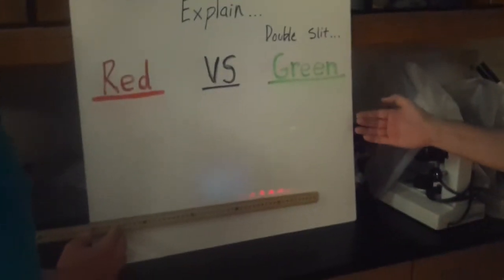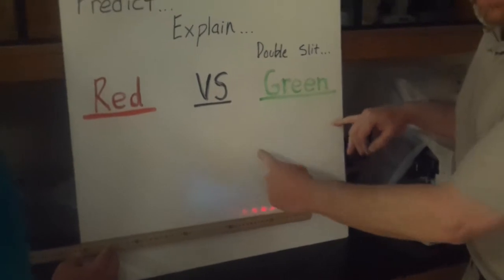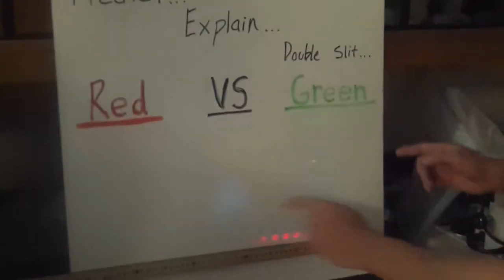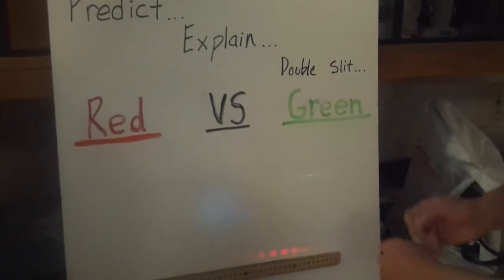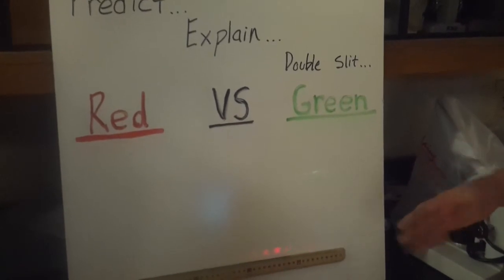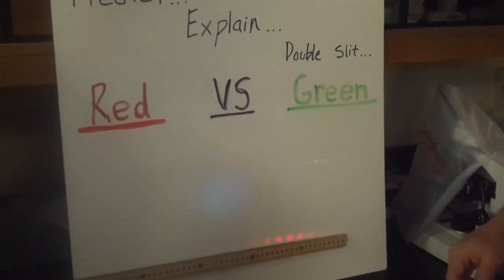And we're asking you to make a prediction. How far do we go with the green light to catch seven fringes? Is it more than 14 centimeters? Is it less? You predict.